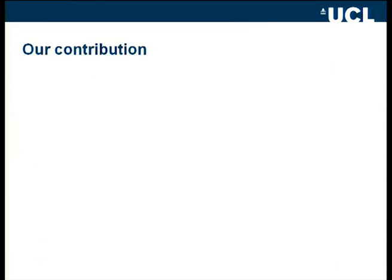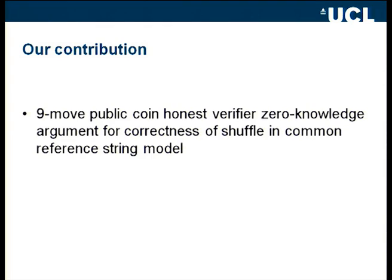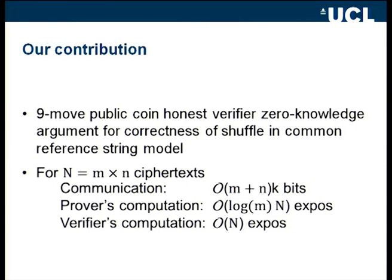Our contribution is an honest-verifier zero-knowledge argument for correctness of a shuffle in the common reference string model, which takes nine rounds. For n = m × n ciphertexts, we achieve sublinear communication of m + n·k bits. For instance, choosing m equal to the square root of n gives complexity O(√n). Our prover takes O(log(m)·n) exponentiations, and the verifier has exponentiations linear in n.